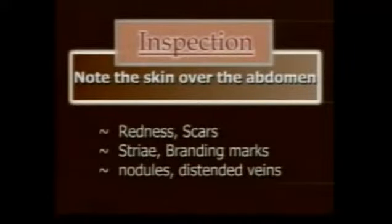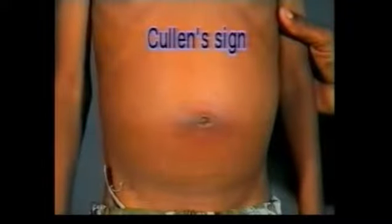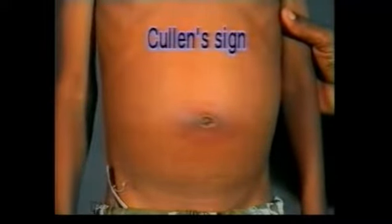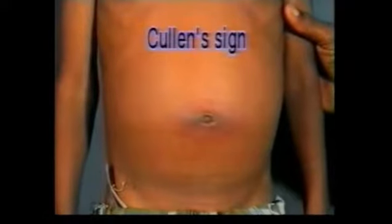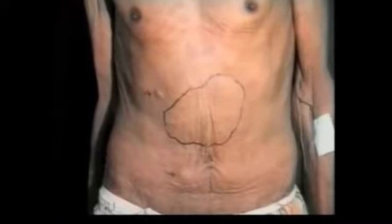Now inspect the skin over the abdomen for redness, scars, striae, branding marks, nodules, and dilated veins. Redness over a lump suggests local inflammation. Redness of skin around the umbilicus in an acute abdomen suggests acute hemorrhagic pancreatitis, termed as Cullen's sign. Branding marks usually suggest presence of chronic or long-standing pain. Hard subcutaneous nodules, as seen in this case of carcinoma of stomach, indicate secondary spread of the malignancy to the skin.